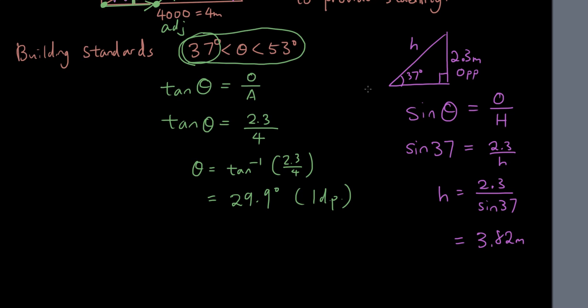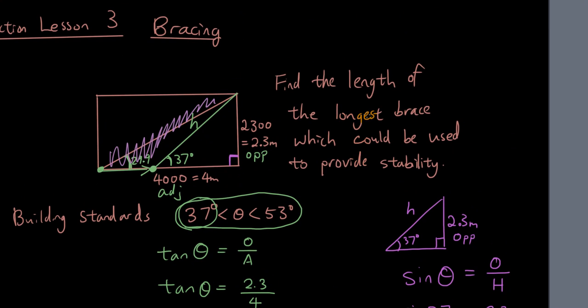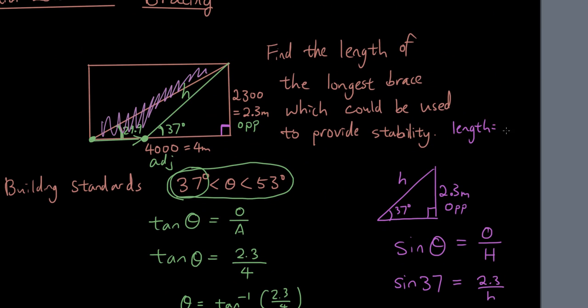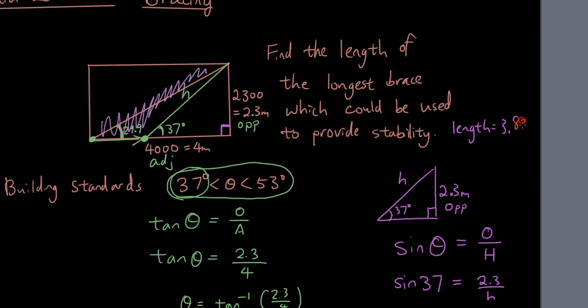And that is the final answer. Find the length of the longest brace. Length equals 3.82 meters.